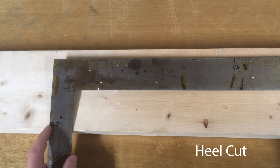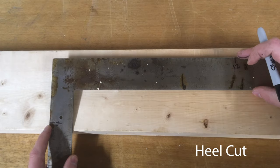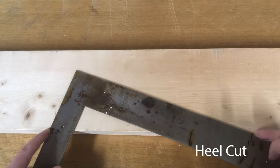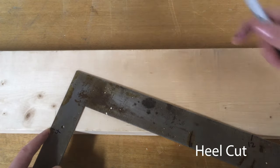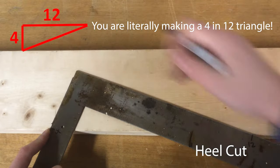To use a rafter square, you find 4 inches on one end, 12 inches on the other, and then put both those marks up against one edge of your board. Marking this line will make your heel cut.